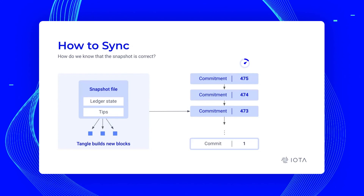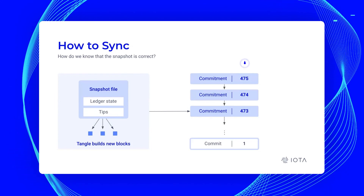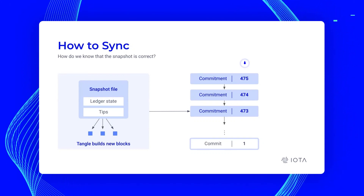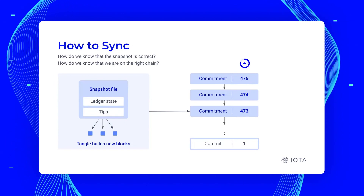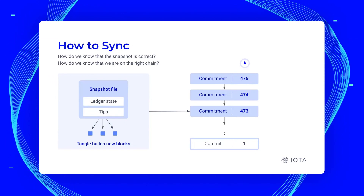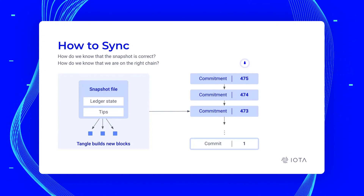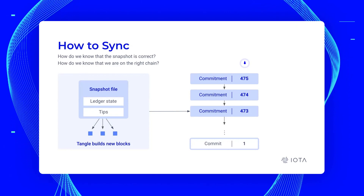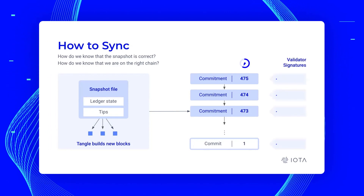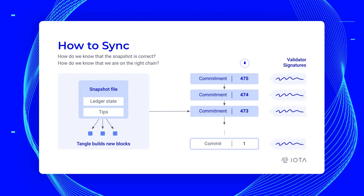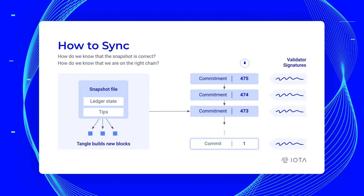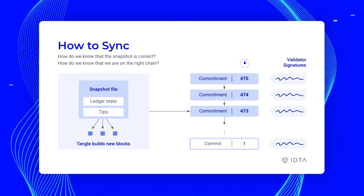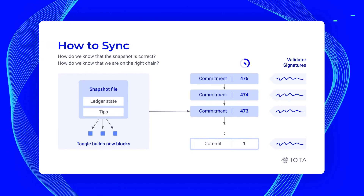When you join the network, if someone has poisoned the snapshot file, you'll see it because your commitment chain will be different than everyone else's. But this begs another question: how do we know that we're on the right commitment chain? An attacker can create a fake snapshot file and then create a fake commitment chain. So what we have is a bunch of validator signatures on all of these different commitments. Based on these validator signatures, we can determine which chain is better — you can go back and read the wiki articles to see exactly what our fork choice rule is.